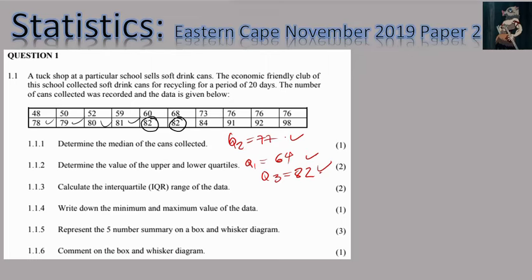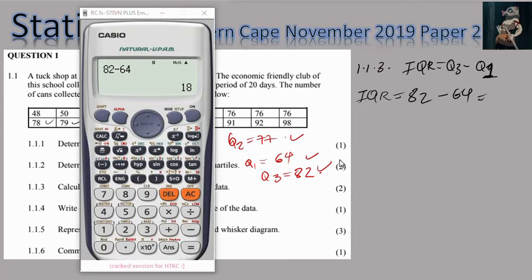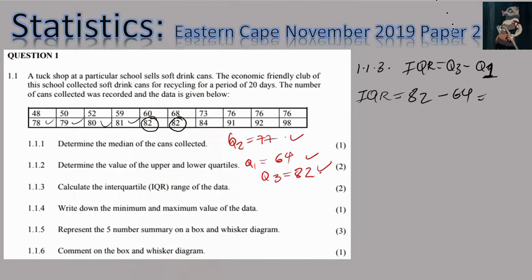Question 1.1.3 asks for the IQR. The IQR is equal to Q3 minus Q1. Substituting: 82 minus 64. The calculator confirms that is 18. So my IQR is equal to 18. Make sure you write both the step and the answer, since the IQR carries two marks.